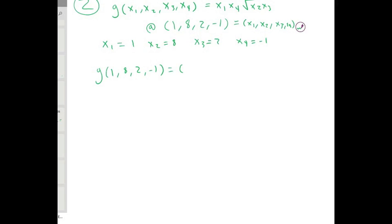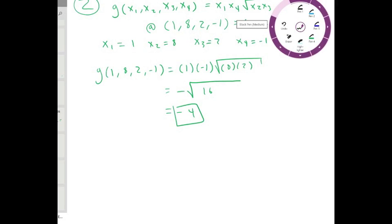This is going to equal x1 times x4, which is 1 times negative 1, times the square root of x2 times x3, which is 8 times 2. So 1 times negative 1 is just negative 1, and 8 times 2 is 16, the square root of 16 is 4, so the answer is negative 4.